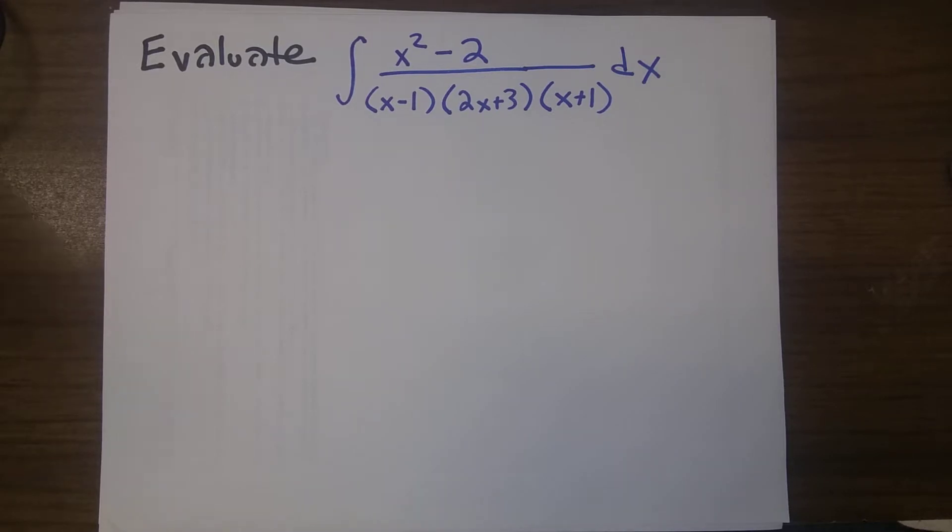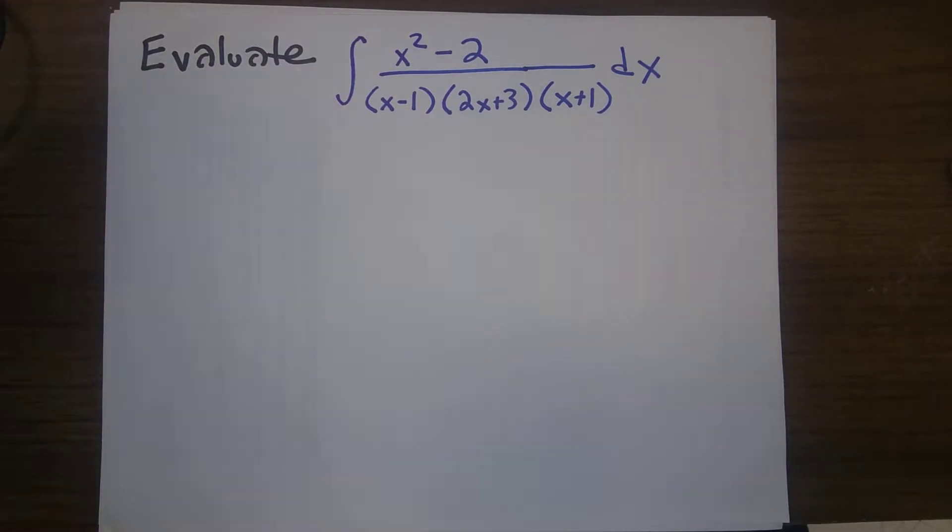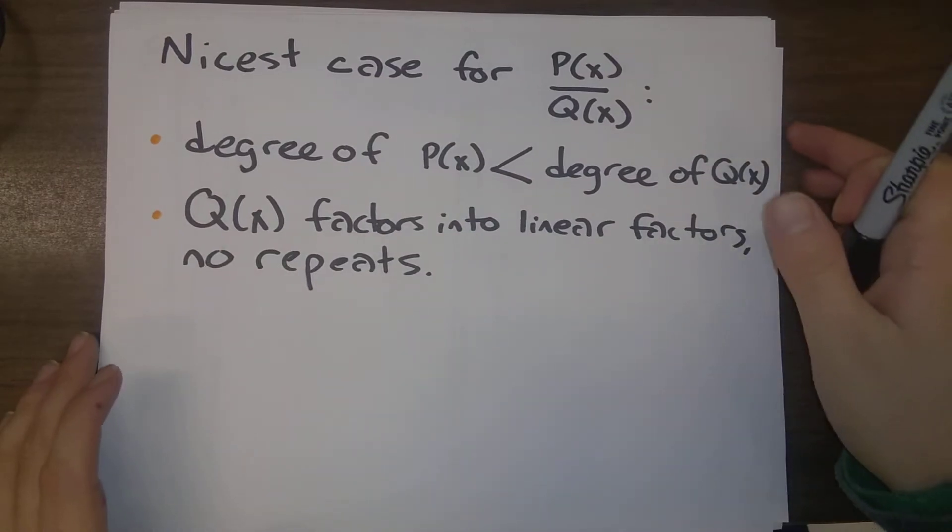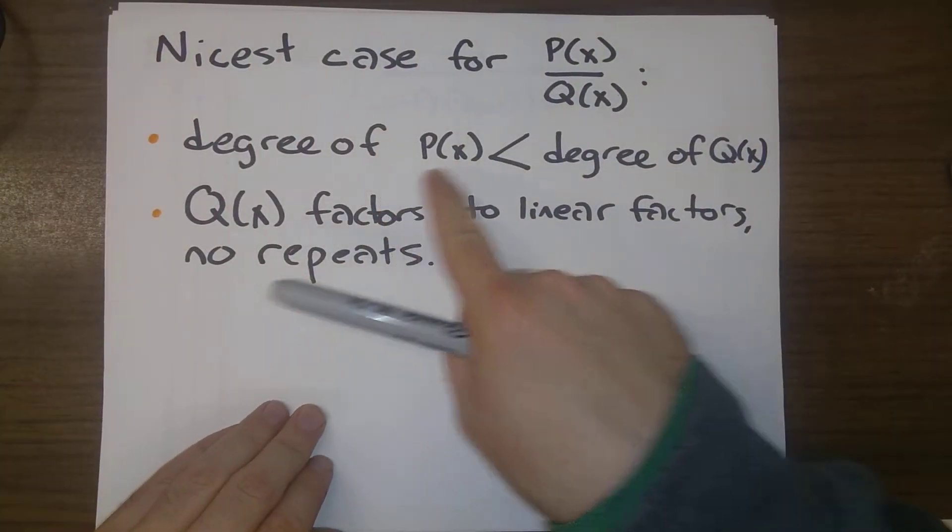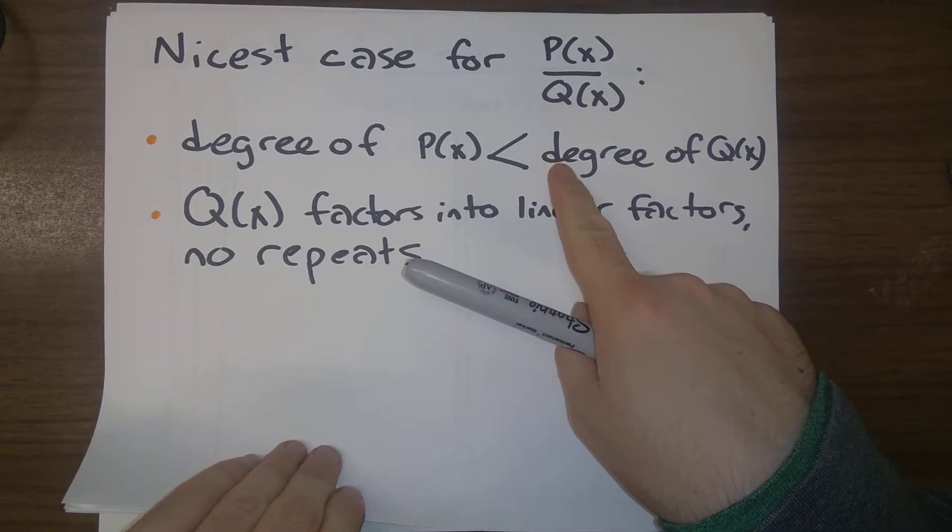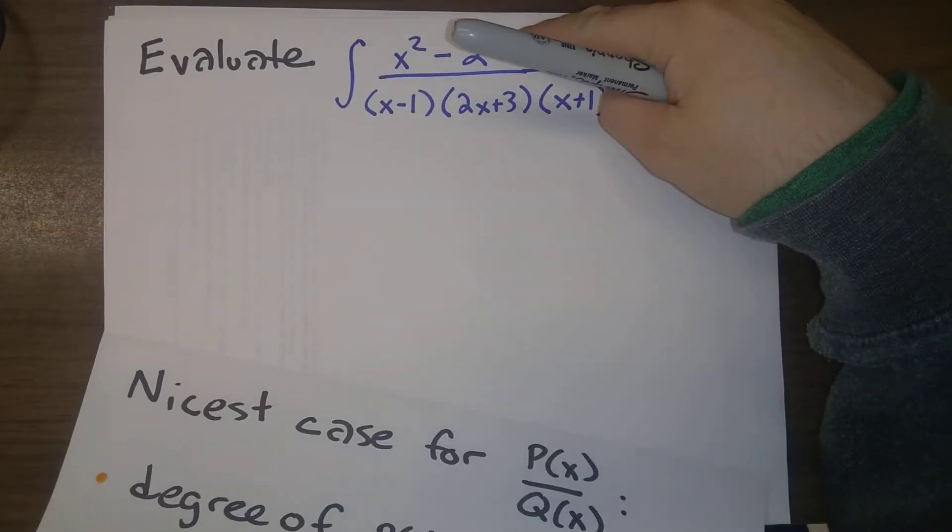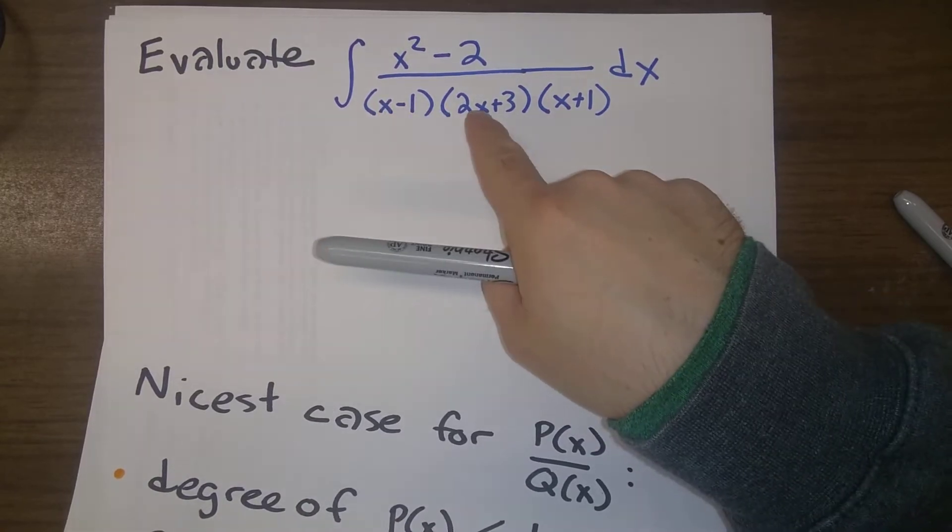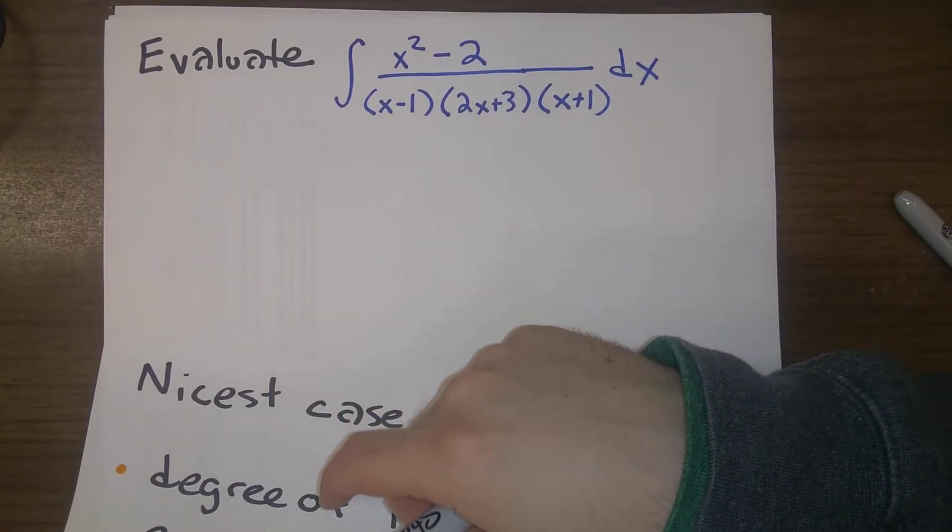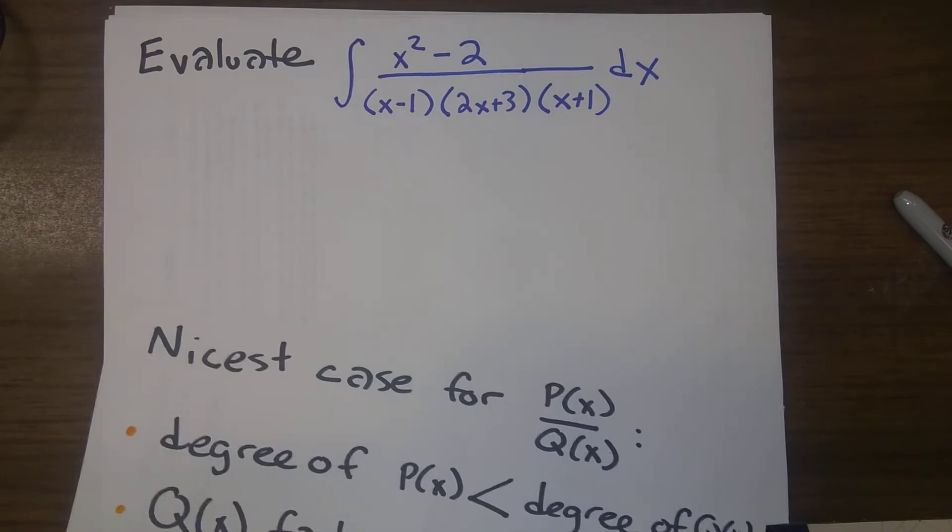We'll note here that even though this is a little bit more complicated than our previous case, it still falls into this nicest case. The degree of the numerator is smaller than the degree of the denominator. The degree of the numerator is 2, and the degree of the denominator is x times 2x times x, which gives us x cubed, so the degree is 3.